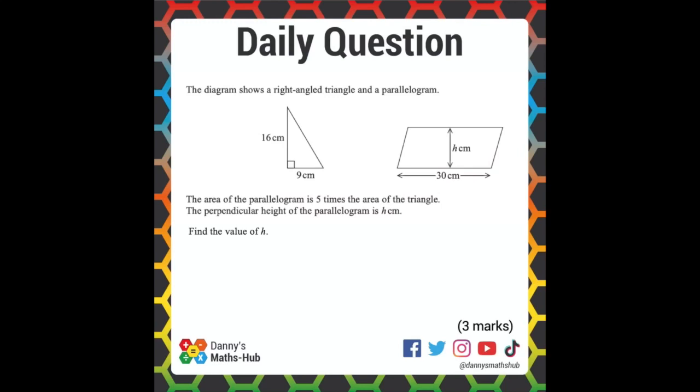The diagram shows a right-angled triangle and a parallelogram. The area of the parallelogram is 5 times the area of the triangle. The perpendicular height of the parallelogram is h. Find the value of h.